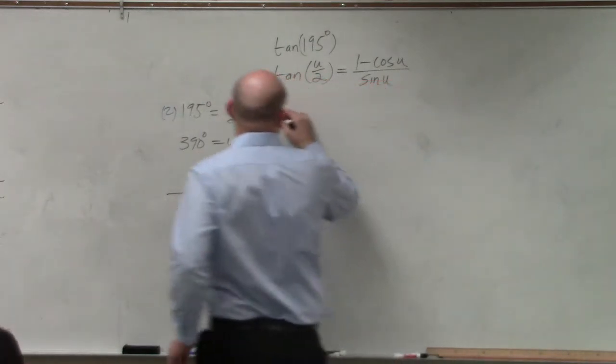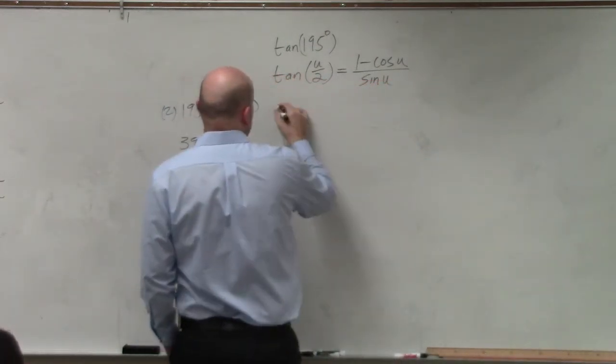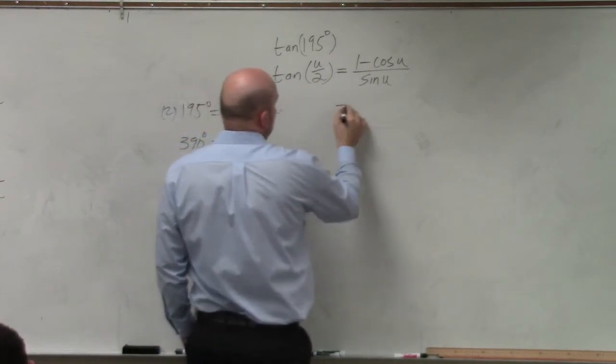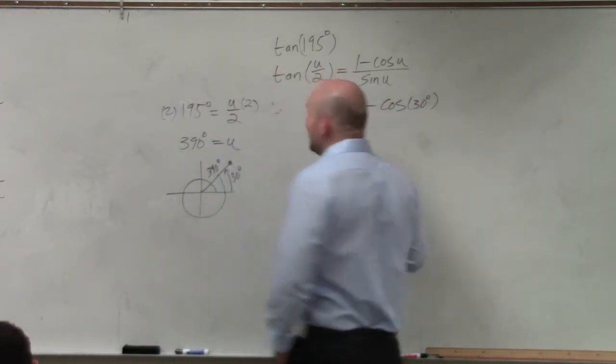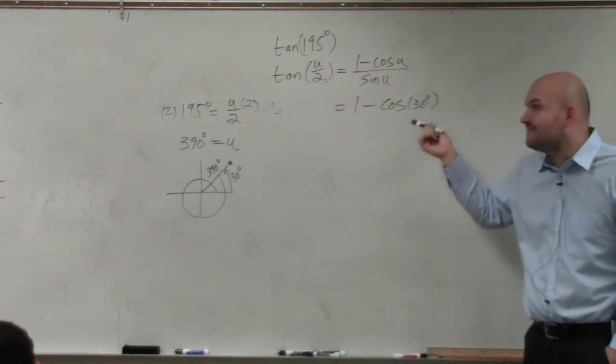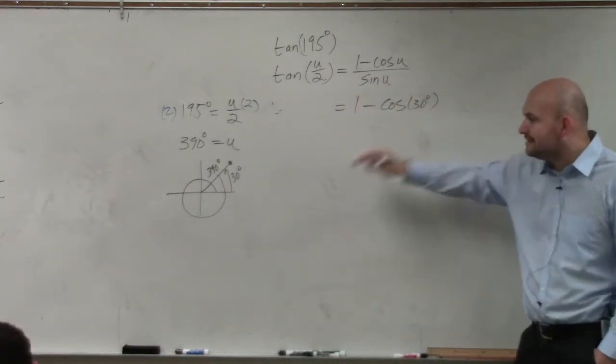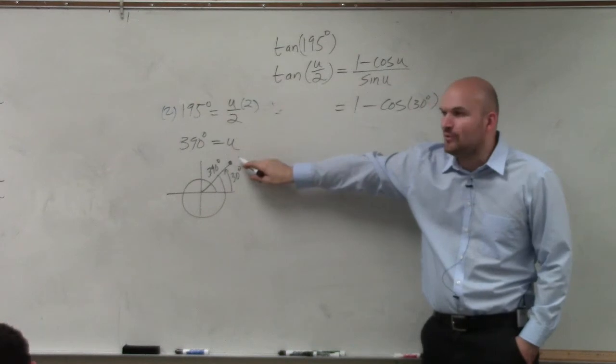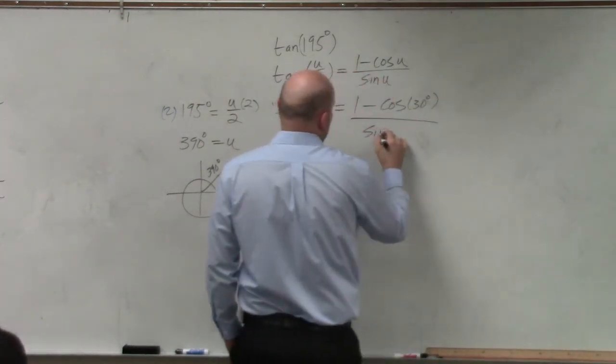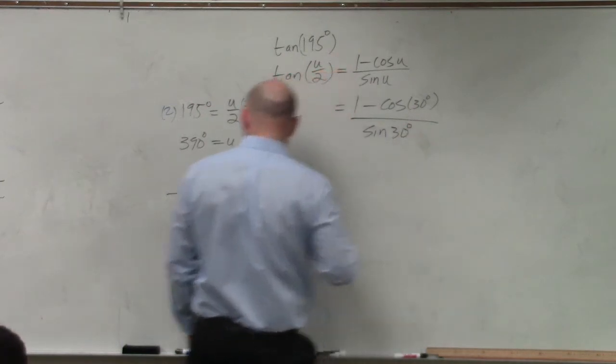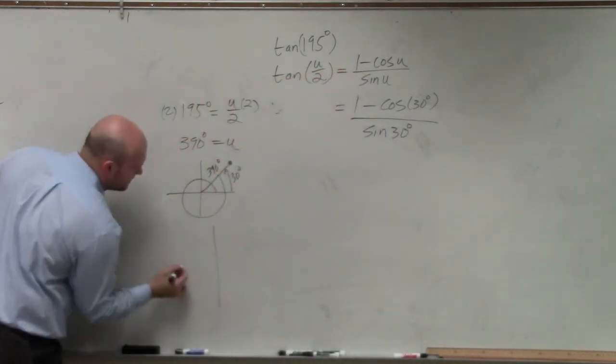So when I'm doing this, I'm going to say that's equal to 1 minus the cosine of 30 degrees. I could do the cosine of 390 if I wanted to, but they're going to give you the same point. So it's just much easier to use 30. And then I have sine of 30 degrees. What is the sine and cosine of 30 degrees?